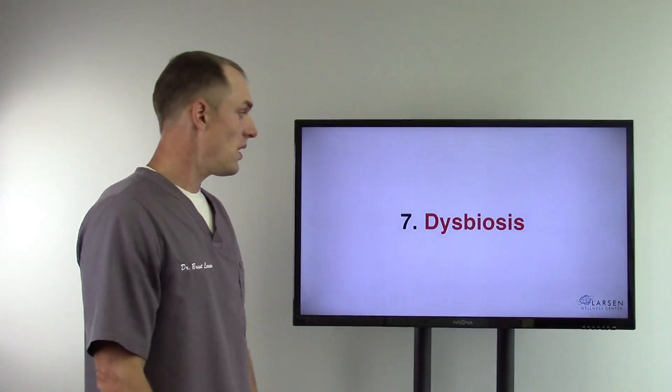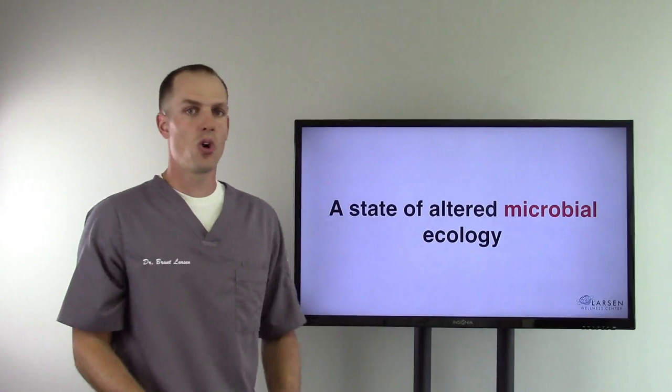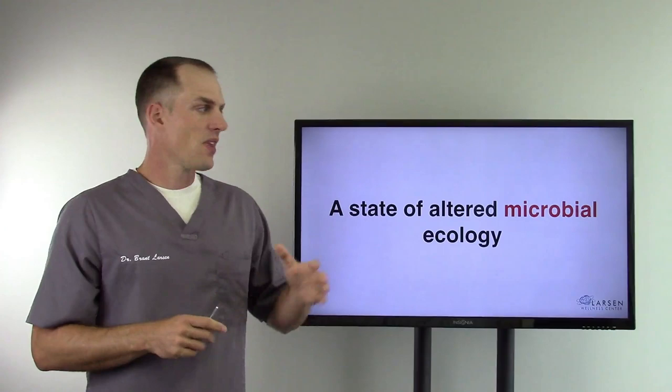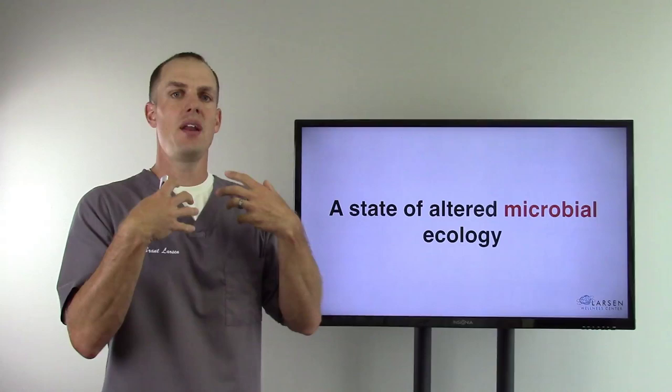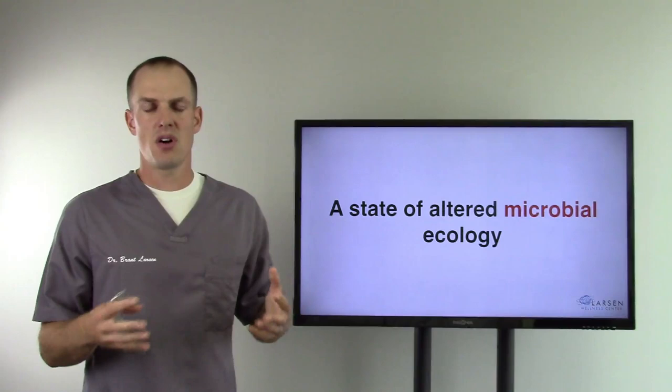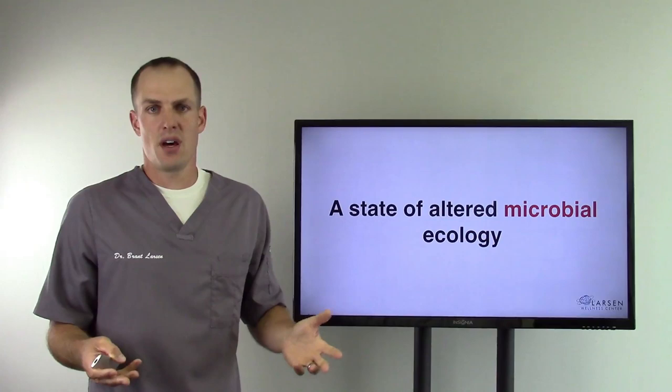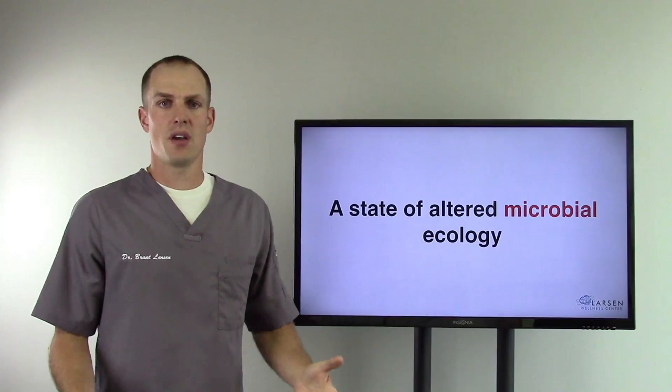Number 7 is dysbiosis. What is this one? A state of altered microbial ecology. Microbes. And these are chronic ones, not acute ones where you have to have an antibiotic or high-powered drug. We work with this a lot in my office. I don't treat them, I help the body to remove these things naturally. So many people are infected with all kinds of things. If you look at my parasite story video, I was infected with roundworms for probably 30 years. Had no idea. I finally figured it out, cleared them out, and everything changed for me. Everything. Because I got rid of the microbes. Microbes are huge - parasites, bacteria, yeast, virus, things like that.